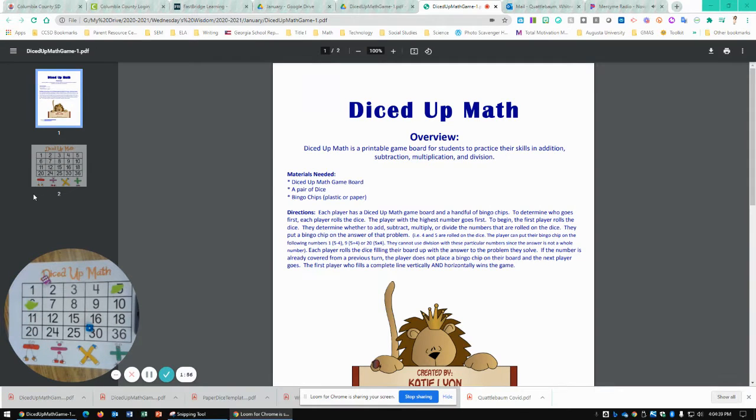Here's where it's going to get tricky. Say the next player rolls, and they roll a 4 and a 2. Well, if I add those, I'm going to get 6, but 6 is already covered. So they're going to either have to subtract, multiply, or divide, depending on what numbers are left on the board.